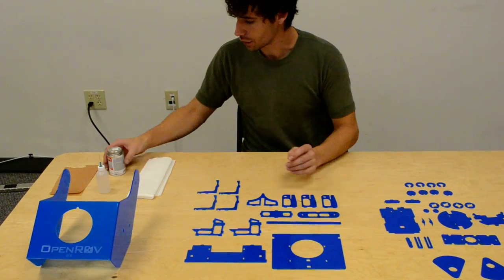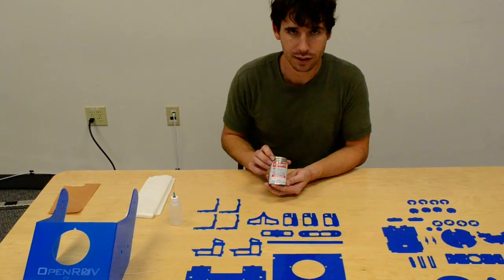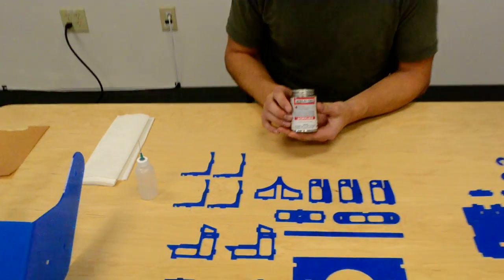Before we start, I just want to show you how we use this glue. This is weld-on acrylic cement. You should be able to buy it online. There are a lot of places that sell it, but it's a really great material.